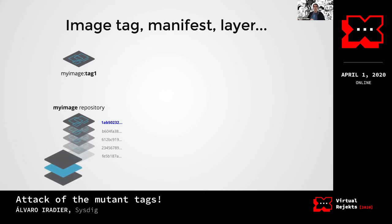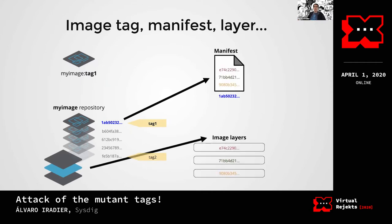What is an image exactly? An image really is just a manifest file that describes the image configuration, startup parameters, and others, plus a set of filesystem layers that compose together to create the root filesystem of the image. The way these layers are composed together using overlay filesystems, copy-on-write mechanisms, subvolumes, snapshots, etc. is a complex topic but not relevant right now. Importantly, layers can be shared between different images as long as both layers have the same content - identified by their digest. This is very good for saving storage and bandwidth when pulling and pushing images from the registry.